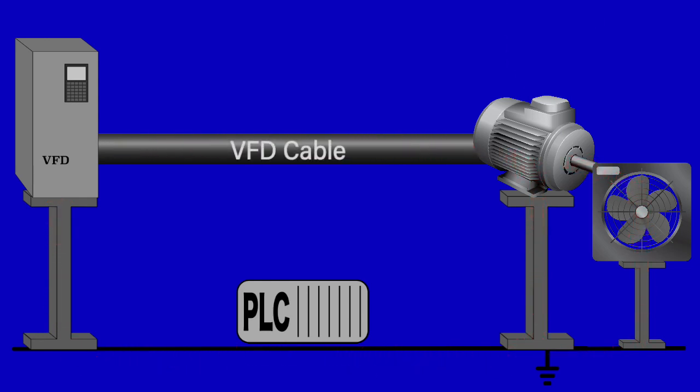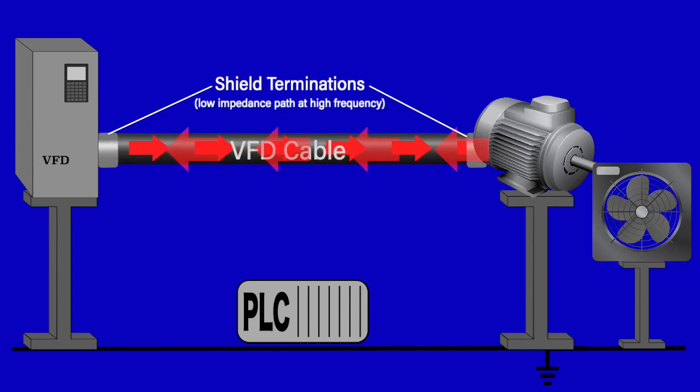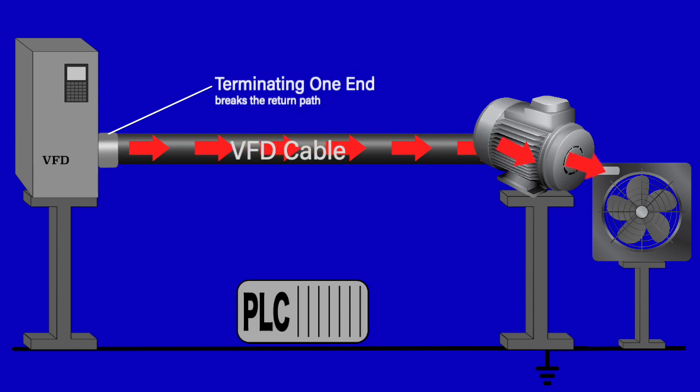VFD cable can control the path of this common mode current. The VFD cable's overall shield has a large surface area, which provides a low transfer impedance at high frequency. Terminating the shield with low impedance at high frequency terminations at both ends of the cable provides the common mode current a controlled path back to the inverter. Terminating only one end of the cable's shield breaks the path, and the common mode current is left uncontrolled.